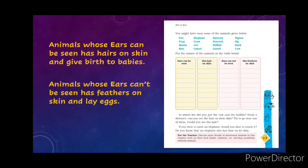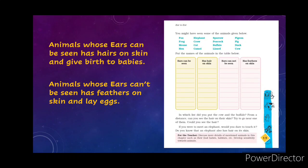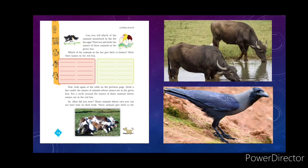So from here, if any question comes about which animals' ears can be seen, who has hair on their skin, who has feathers, or whose ears are not visible — I hope you can categorize them now. On page number 16, can you tell which of the animals mentioned in the list lay eggs? Crow, peacock, lizard, hen — these animals lay eggs. So find out and write the names of the animals in the green box.